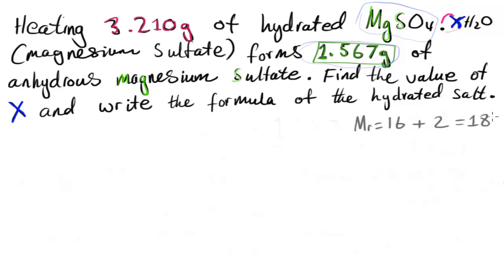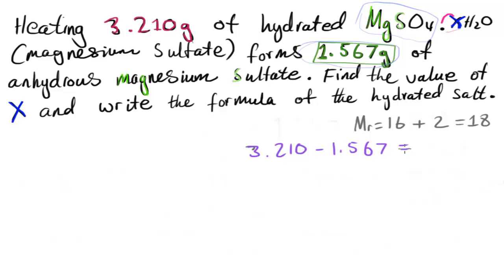Now we can find the mass of water. The hydrated compound has water but the anhydrous form doesn't, so all the water lost must be the difference between the two masses. Subtracting: 3.210 minus 1.567 gives us a mass of 1.643 grams of water.